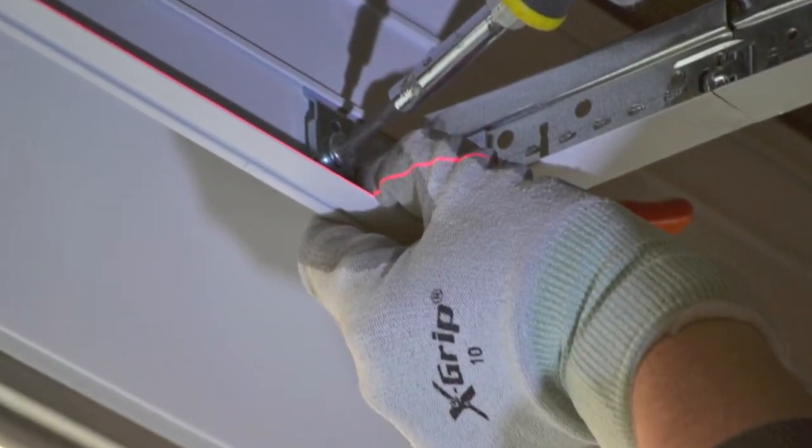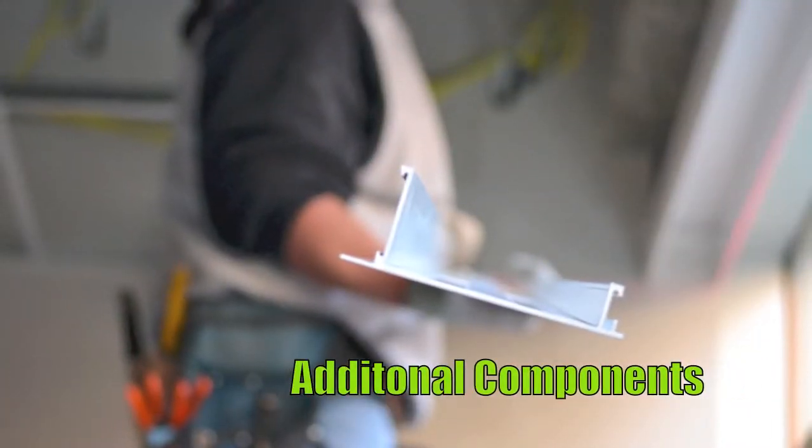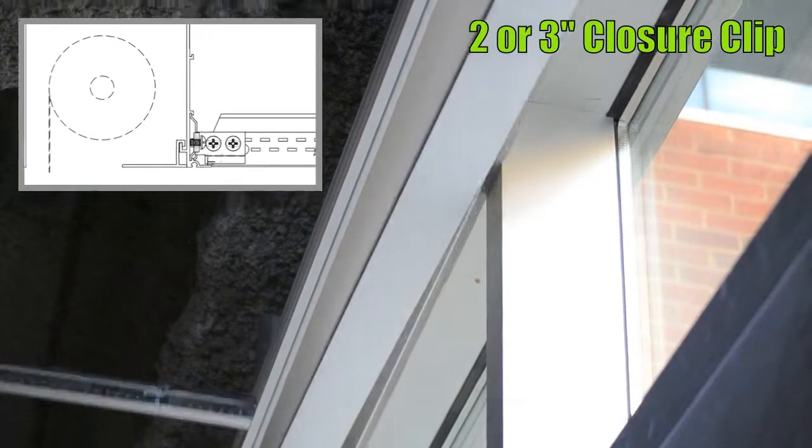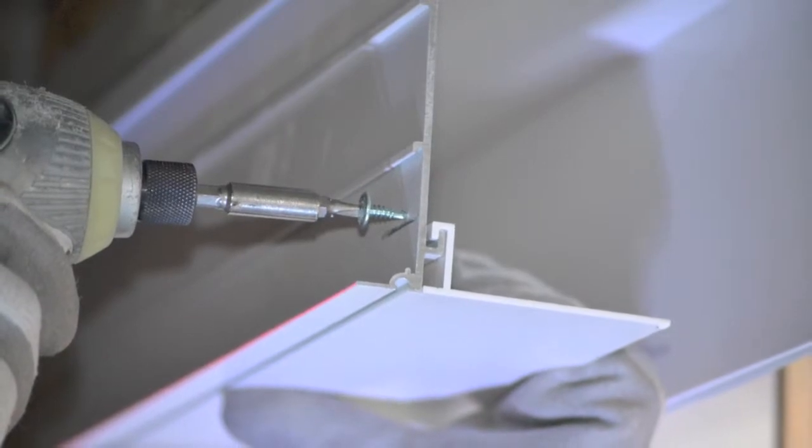Axiom T-bar connector clips automatically ship with every Axiom shipment. An integrated 2- or 3-inch closure clip is available for when you want to hide those shades. Secure as shown here.